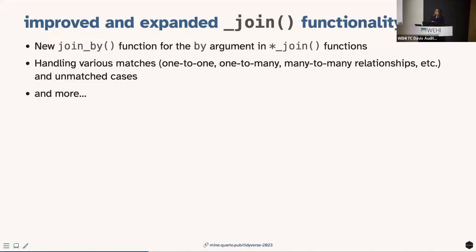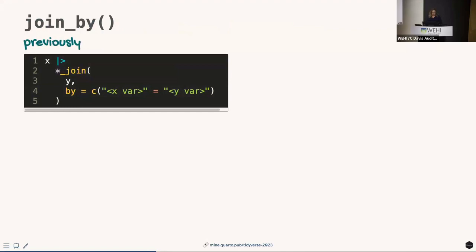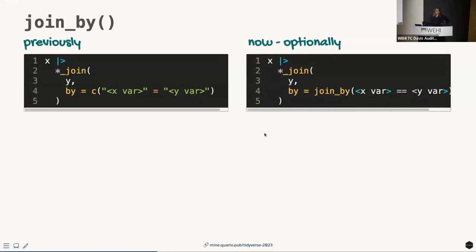There is a new join_by() function for the 'by' argument in any join function. New join functions also gained arguments to handle various match relationships — one-to-one, one-to-many, many-to-many — as well as explicitly handling unmatched cases. Previously you might use a named character vector with quoted strings; now optionally with join_by() you can use non-standard evaluation and skip the quotes.